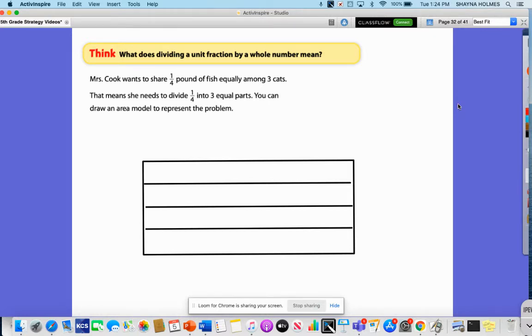Our example problem says Ms. Cook wants to share 1/4 pound of fish equally among three cats. That means she needs to divide 1/4 into three equal parts. You can draw an area model to represent the problem.